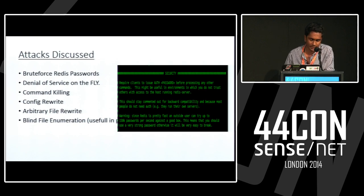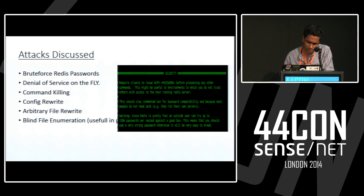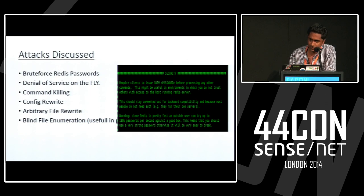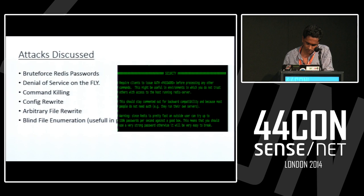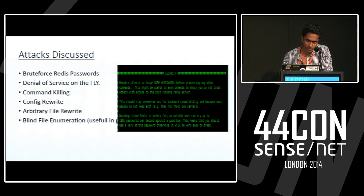The attacks on Redis include: brute-force Redis passwords, denial of service on the fly, command killing, configuration rewrite, arbitrary file rewrite, and blind file enumeration — which is useful in pentests. From the Redis configuration file itself: 'Warning — since Redis is pretty fast, an outside user can try up to 150,000 passwords per second against a good box. This means you should use a very strong password, otherwise it will be very easy to break.' So the tool also supports dictionary attacks and can crack pretty long passwords within a few seconds.